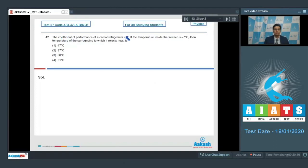Question number 42 says the coefficient of performance of a Carnot refrigerator is 7. If temperature inside freezer is minus 7 degrees Celsius, then the temperature of the surrounding to which it rejects heat is.